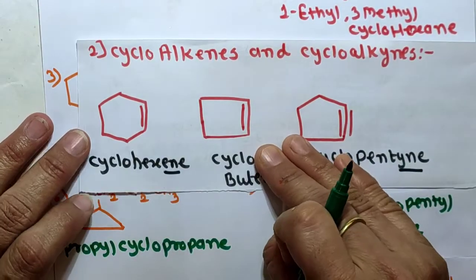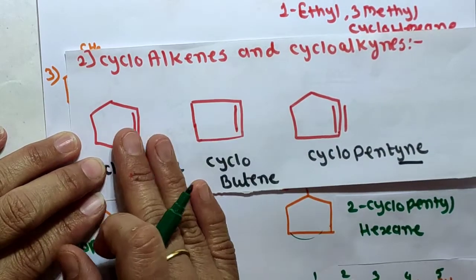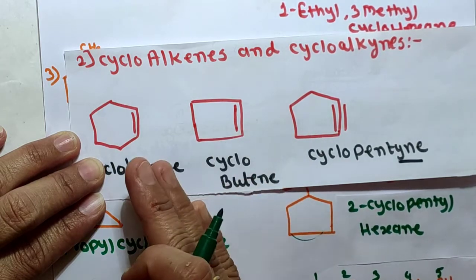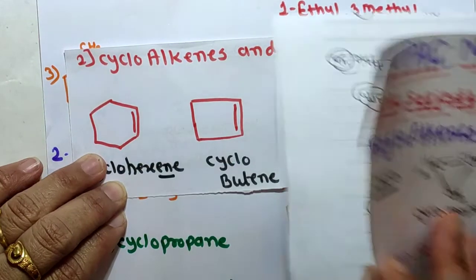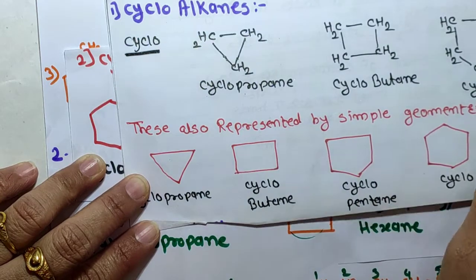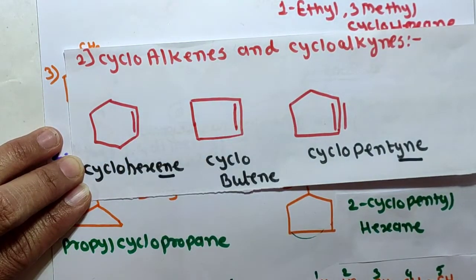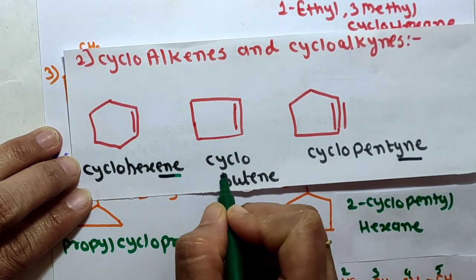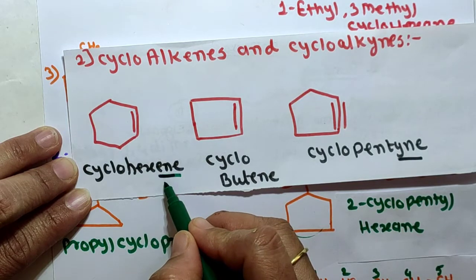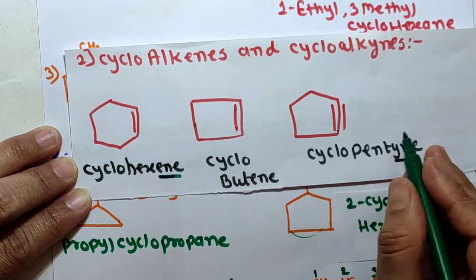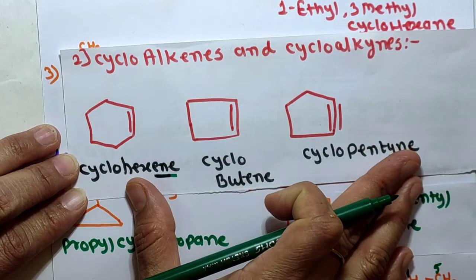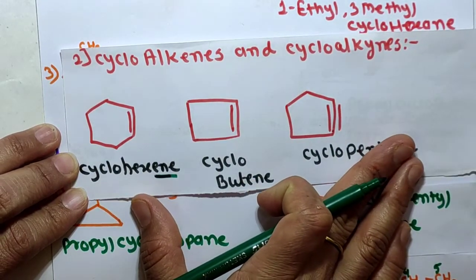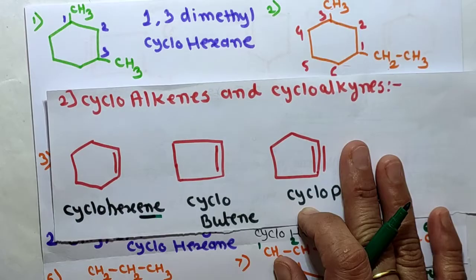Now for cycloalkenes and cycloalkynes. The word 'cyclo' is prefixed before the name of the alkene or alkyne having the same number of carbon atoms in the ring. The names cyclopropyl and cyclobutyl remain the same, but where a double bond is present we add '-ene', giving cyclohexene. Where a triple bond is present, we add '-yne', giving cyclopentyne. These are simple cycloalkenes and alkynes. Now for substituted cycloalkenes and cycloalkynes.